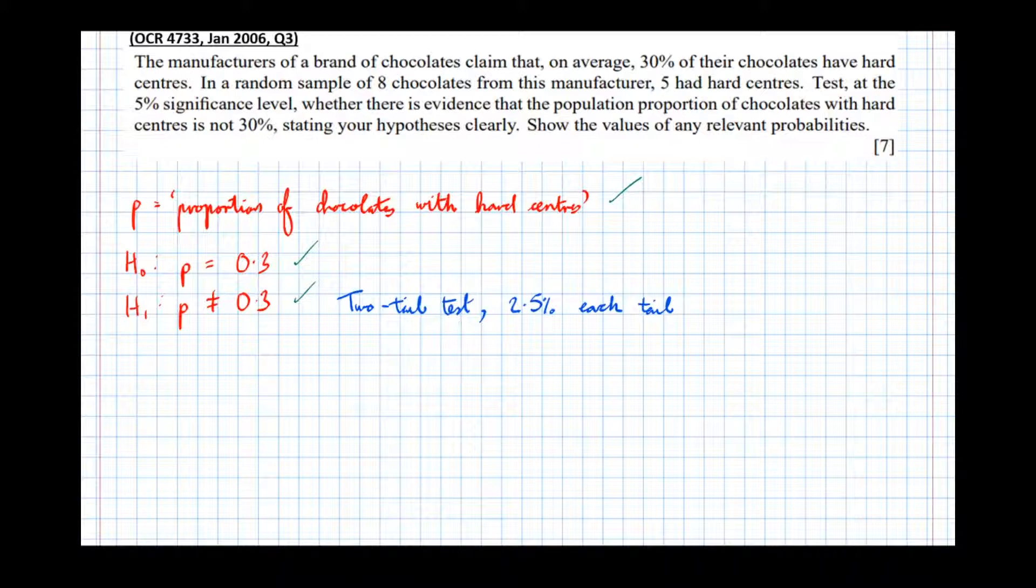So now we need to know whether to test the left or the right-hand tail—we want to know if the number of chocolates has increased from expectation or decreased from expectation. Where we'd expect—and again I'm doing this in blue because it's not necessarily worth marks—we'd expect eight chocolates, and we're told that 30% of them have hard centers, so expect 8 times 0.3, which is 2.4, to have hard centers.